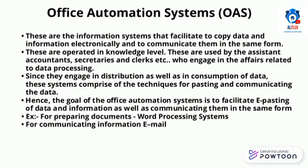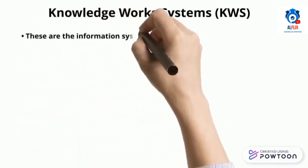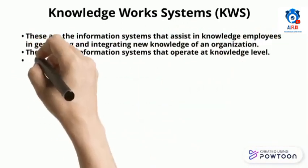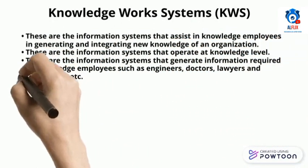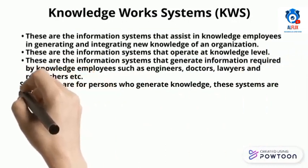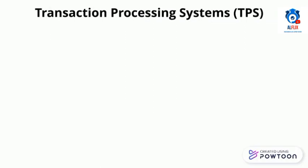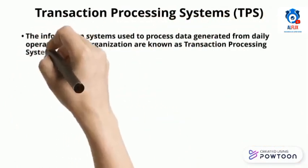The goal of office automation systems is to facilitate electronic storing of data and information as well as communicating them. Examples include word processing systems for preparing documents and email for communicating information. Knowledge work systems are the information systems that assist knowledge employees in generating and integrating new knowledge within an organization. They operate at the knowledge level and generate information required by knowledge employees such as engineers, doctors, lawyers, and researchers. Since these are for persons who generate knowledge, these systems are not uniform. An example is computer-aided design.